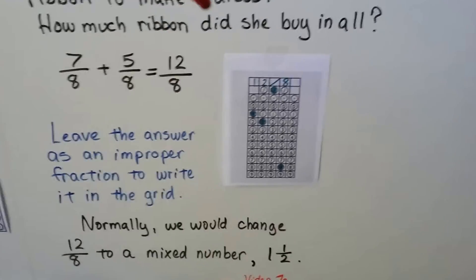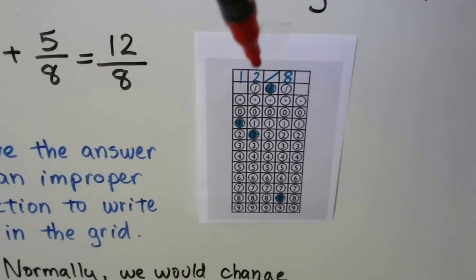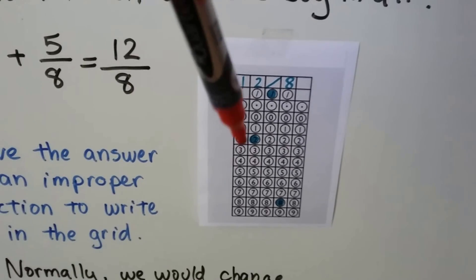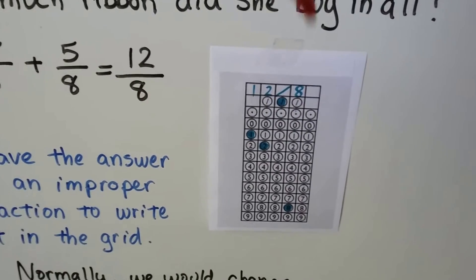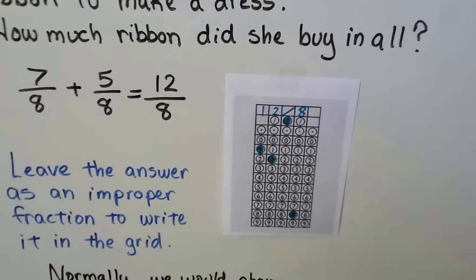We leave it as the 12-eighths and we write in the one, the two, the slash, the eight, and those are the circles that we fill in. And that one didn't get used, so it's blank.